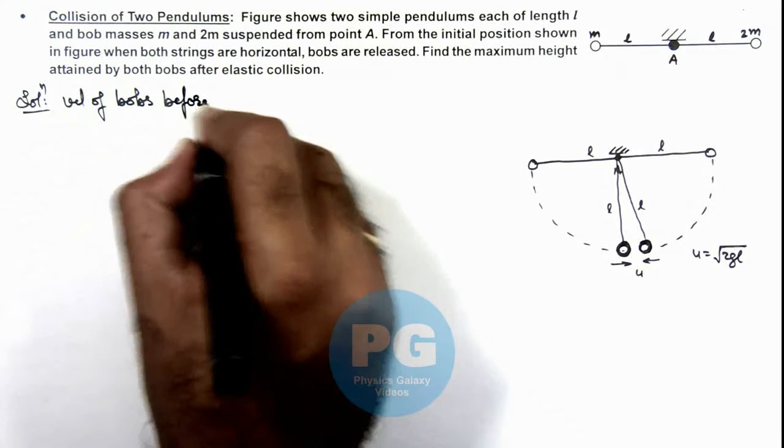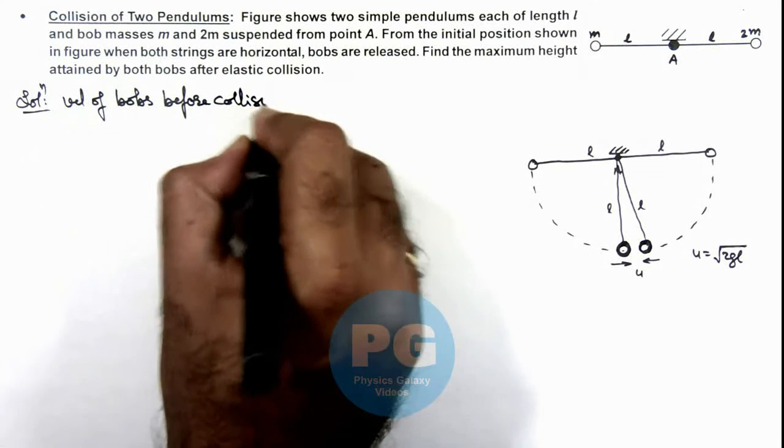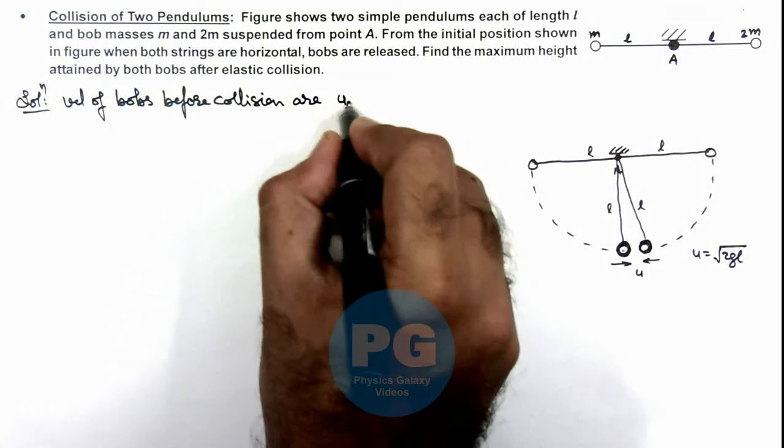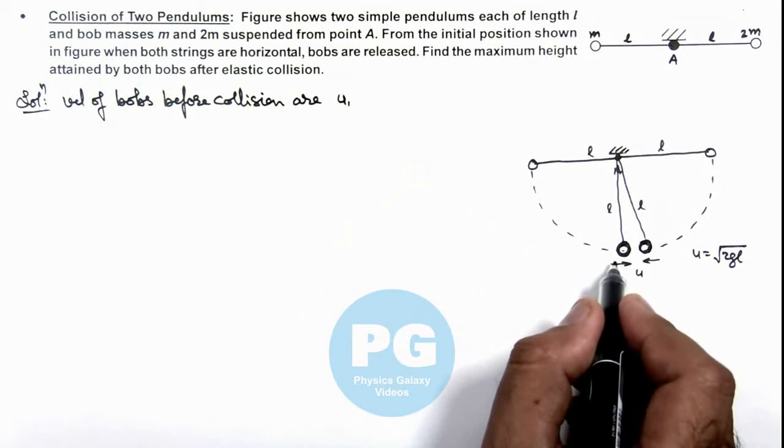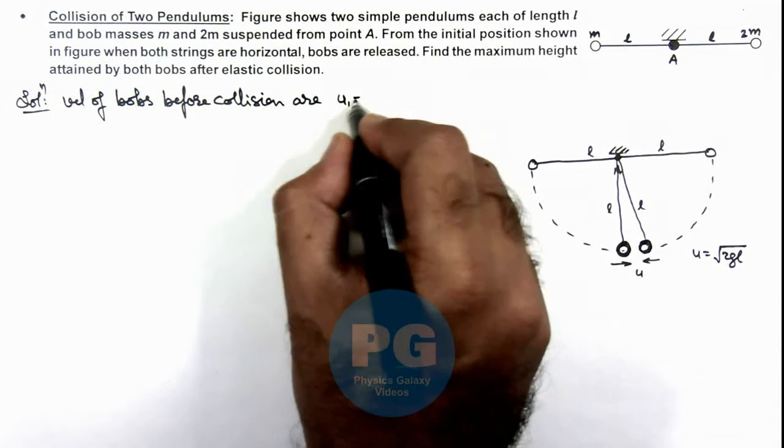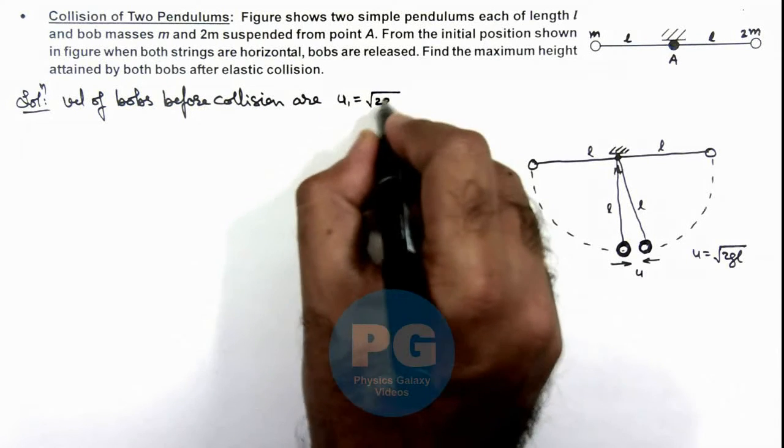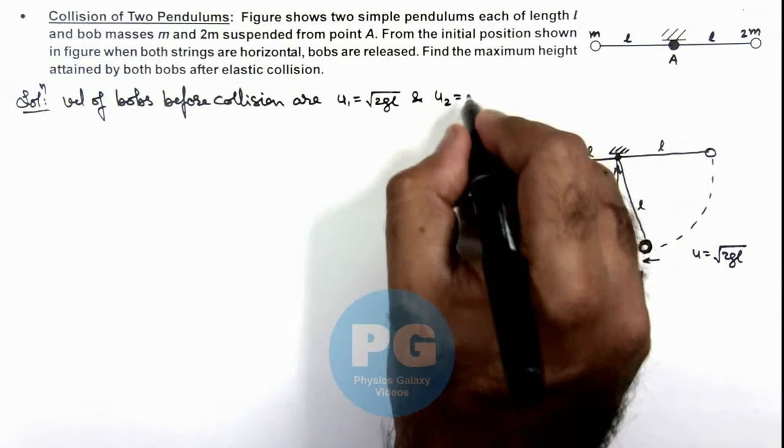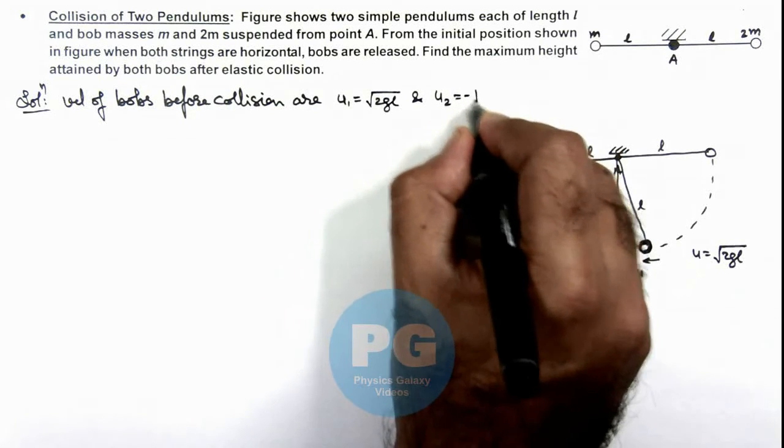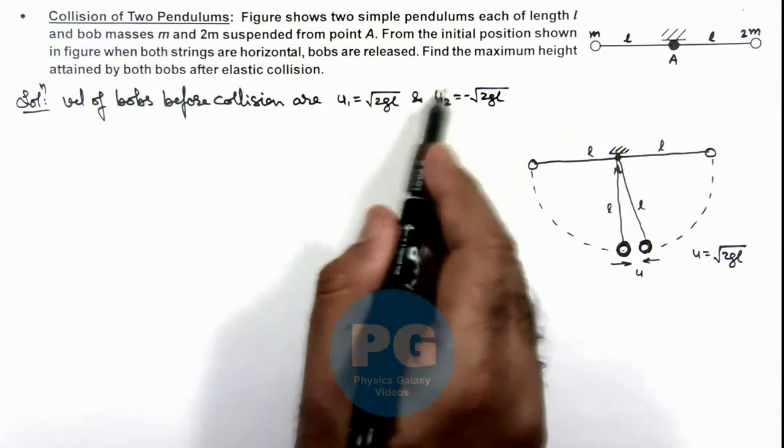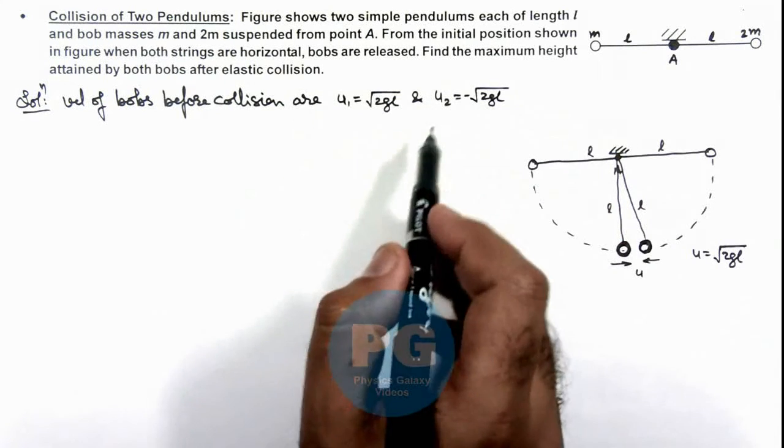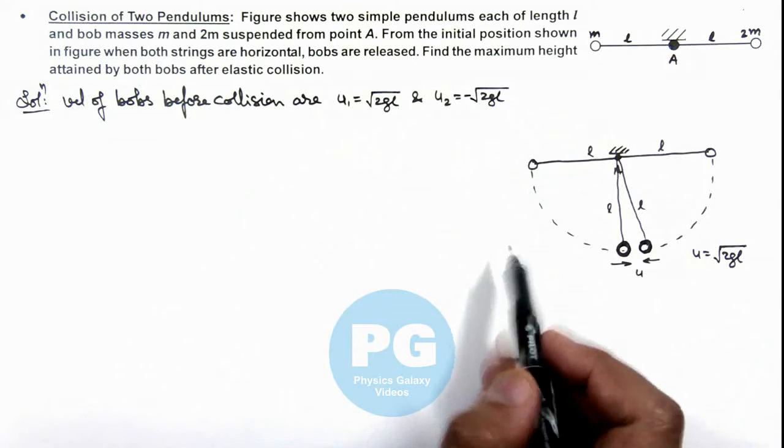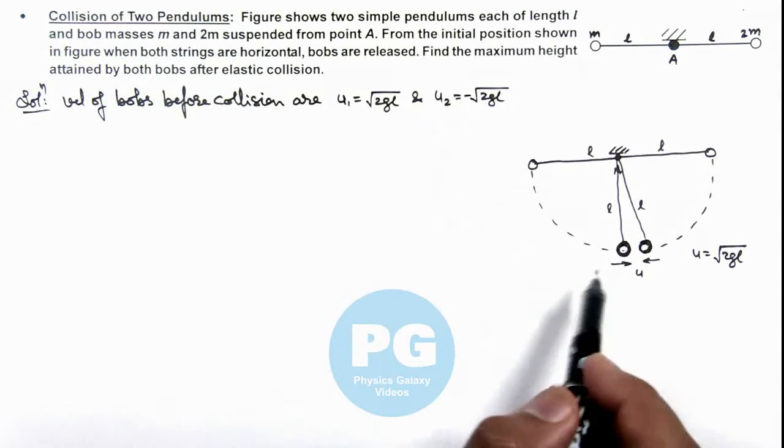Velocities before collision are: u1 for the first bob which is of mass m can be written as root 2gl, and u2 for the second bob, as it is moving in opposite direction, we can write as minus root 2gl. It is not necessary to represent these as vectors as negative sign in one dimensional motion itself represents the opposite velocity.